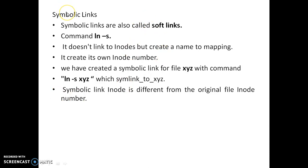Symbolic links are different from hard links. Hard links are created directly using the ln command, but symbolic links are soft links created using the ln -s option. The key difference is that symbolic links do not share the existing inode number — they create their own inode number. The inode number of a symbolic link is different from the original file's inode number.